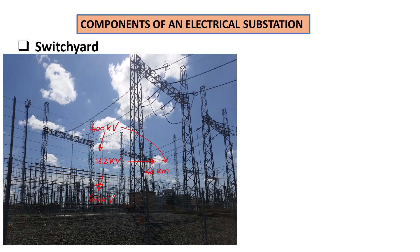That second switch yard steps it down to 66 kilovolt, which can go to another location or be stepped down to 33 kilovolt to go straight to distribution transformers and feeders that will start feeding into different areas. In the switch yard, there are a lot of components.